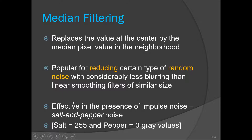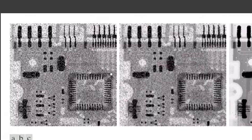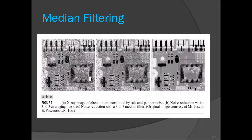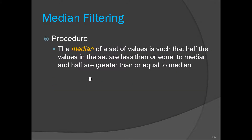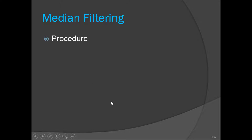The median filter provides excellent noise reduction and is very effective in the presence of impulse noise, also known as salt-and-pepper noise. Consider this first image — a circuit image with salt-and-pepper noise. This image has white and black pixels which are the noise. The white pixels are known as salt noise and the black pixels are known as pepper noise. The white pixels will have a value of 255 and the black pixels will have a gray value of zero. This noise may happen due to a fault in the sensor or during the recording of the image.